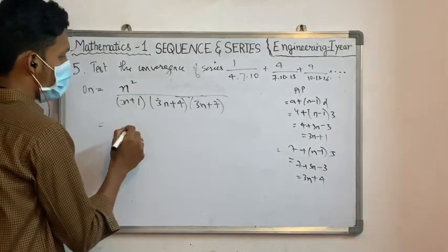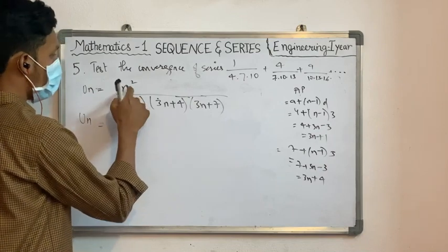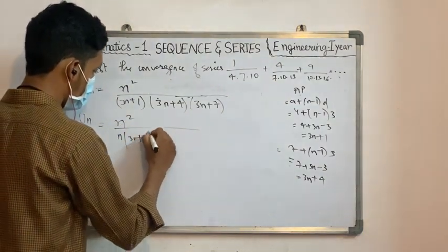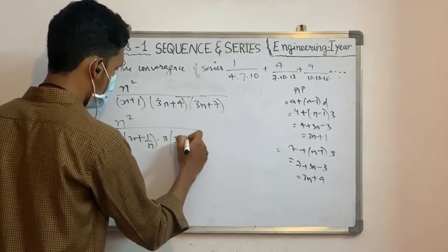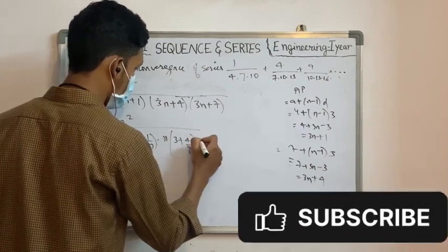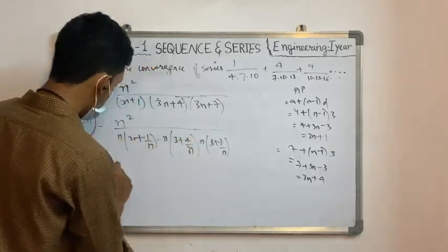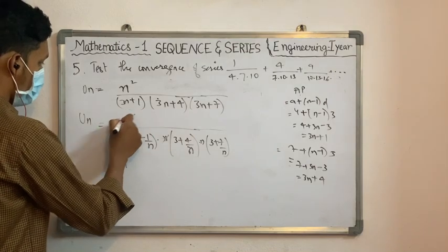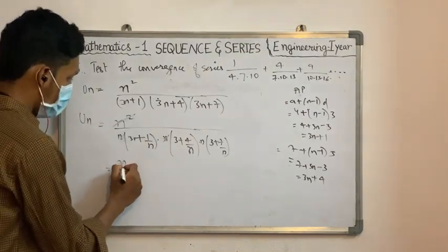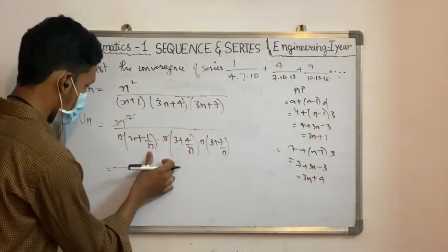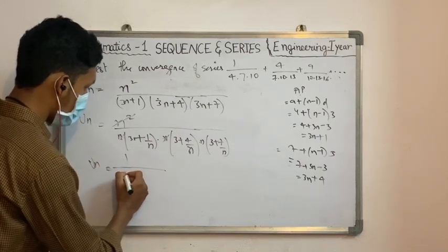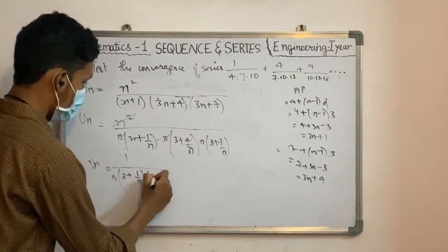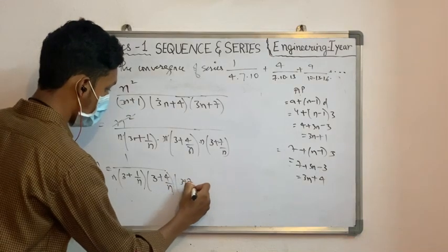Now we solve Un. Taking n common from the denominator: n×(3 + 1/n) × n×(3 + 4/n) × n×(3 + 7/n). After cancelling the n terms, we factor out n from the denominator, getting 1/(3 + 1/n) × 1/(3 + 4/n) × 1/(3 + 7/n).